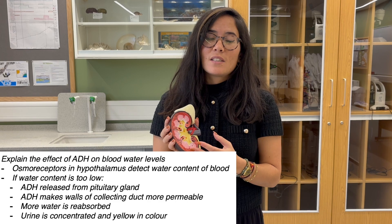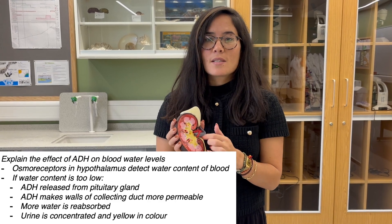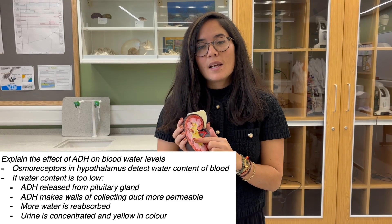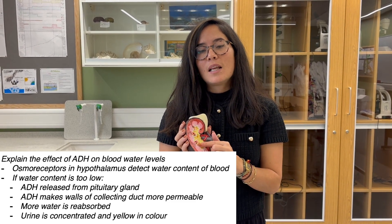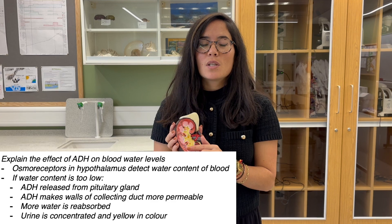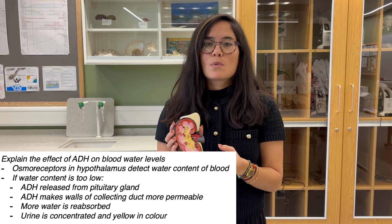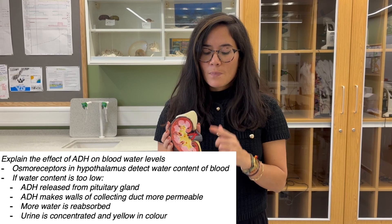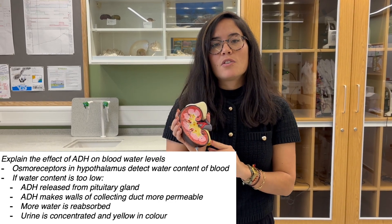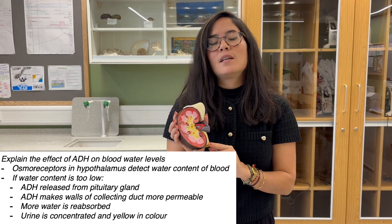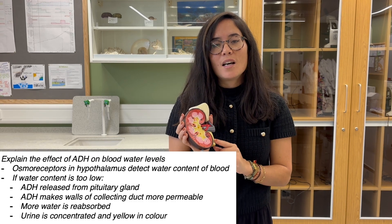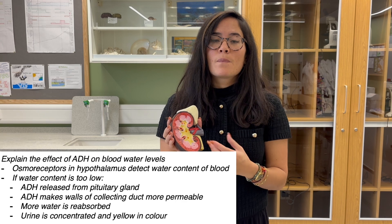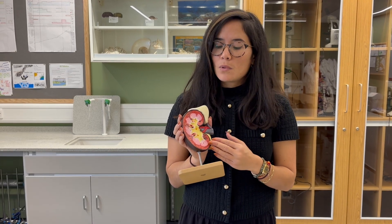The anti-diuretic hormone travels to the kidney, specifically the collecting duct of the nephrons. Here it makes the walls of the collecting duct more permeable to water, meaning that more water is reabsorbed into the blood. So there's less water available to make urine, less water flows down the ureter to the bladder, and the resulting urine is high in concentration — quite smelly, yellow in colour — and that helps conserve our blood water levels.